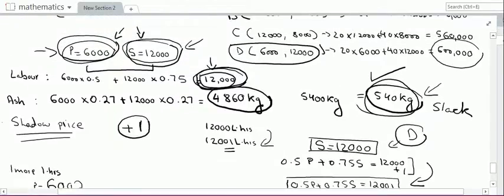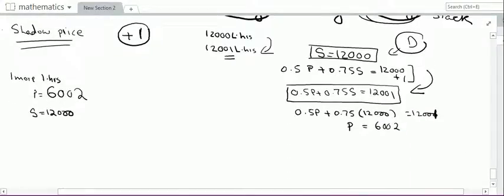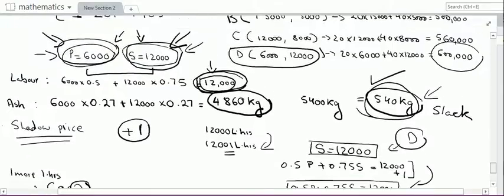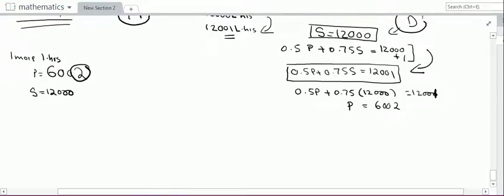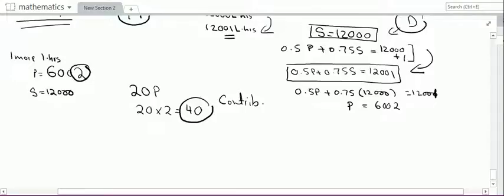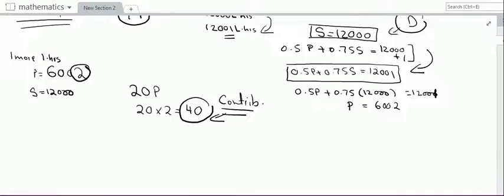Previously I was producing 6,000 units of P and 12,000 units of S. With one more labour hour, I could produce two more units of P. From the contribution equation C = 20P + 40S, each unit of P earns 20 rupees contribution. Two more units of P means 40 rupees of additional contribution from one extra labour hour.